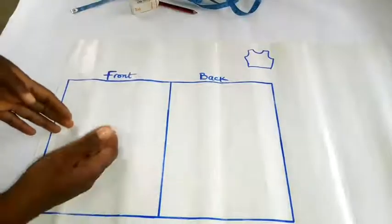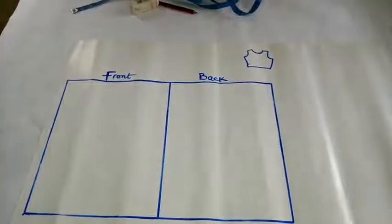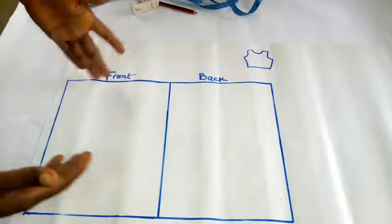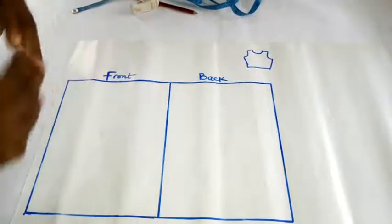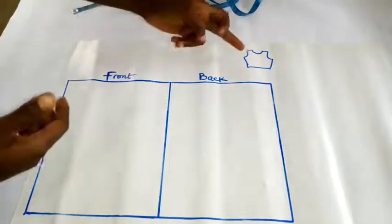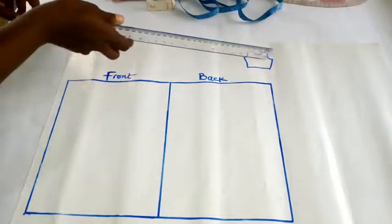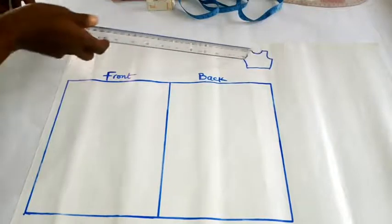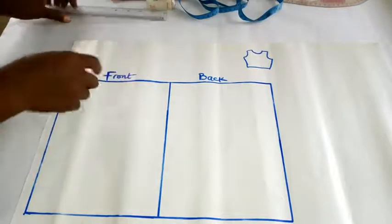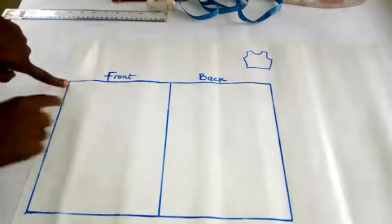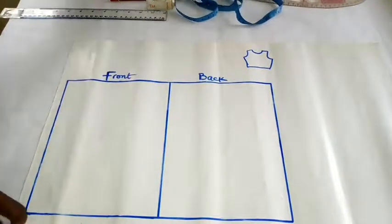As you can see, I have two boxes here - one is the front and the other is the back. I'm going to be drafting the front and back at the same time. How was I able to get the width? This width you're seeing here, I used the biggest part of the half length, which is the chest circumference area. If you look at it critically, you'll see that it's bigger than every other part here. And the length, I used her half length which is 9 inches.